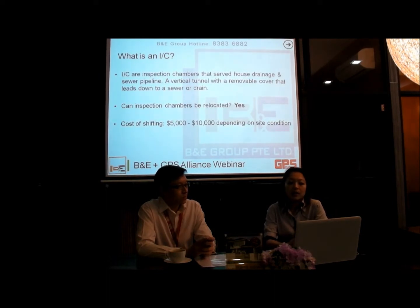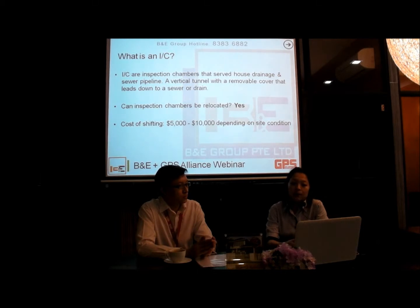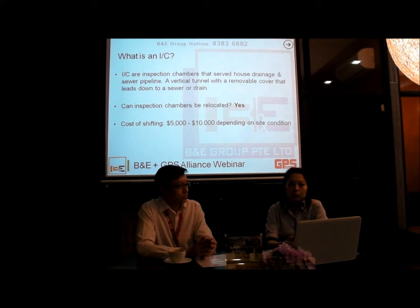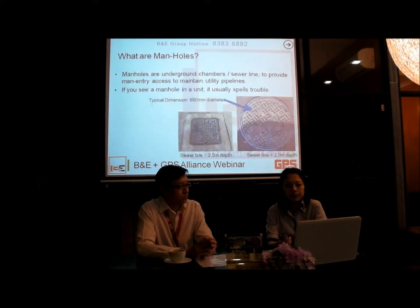A question purchasers may have: what if the IC falls within the bedroom or within the dry kitchen — can the IC be relocated? Yes, it can. However, the cost of shifting is between $5,000 and $10,000 depending on site conditions. So if an IC is found within the internal of the building, it is not an issue at all, as the IC can easily be relocated to the external area.